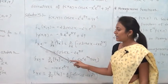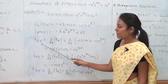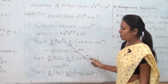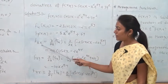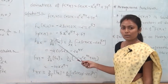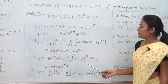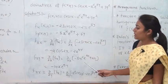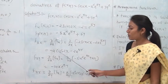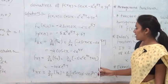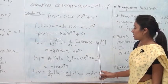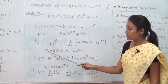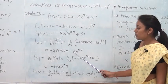For f_xx: differentiate f_x = −2 sin 2x − 2x·e^(5y) with respect to x. Derivative of −2 sin 2x is −4 cos 2x; e^(5y) is constant and derivative of 2x is 2. Therefore f_xx = −4 cos 2x − 2e^(5y).